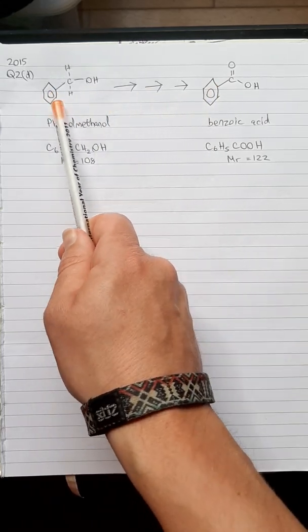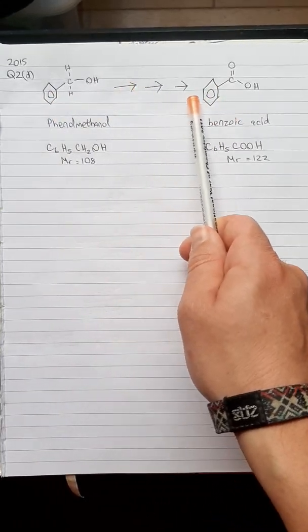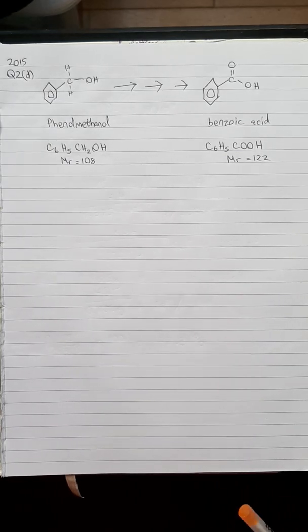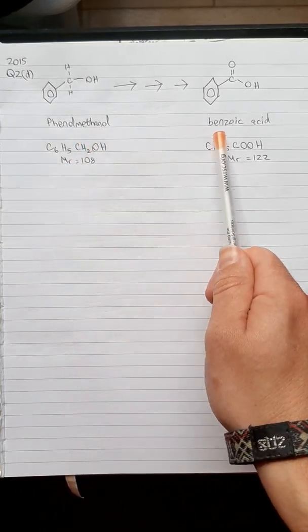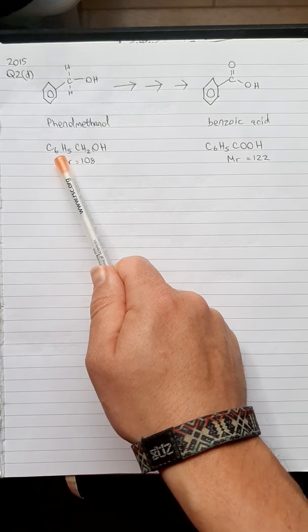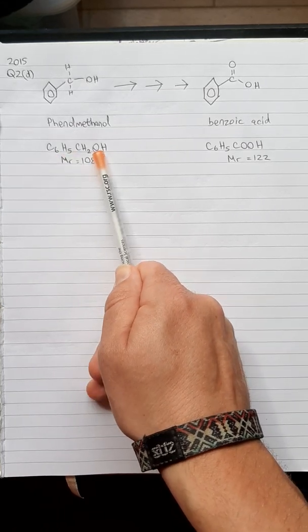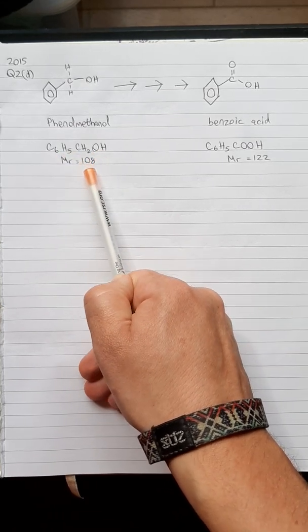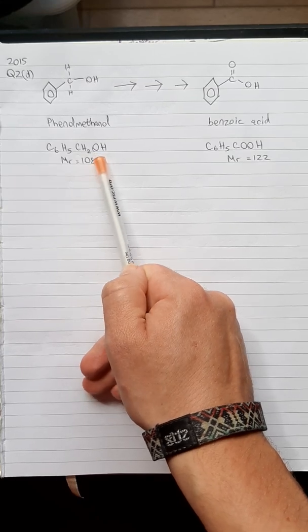The steps in between are alluded to in the question, and they give you the names phenylmethanol and benzoic acid. I've written them there in a slightly different way which helps to work out the MR, and I've calculated this already to save some time.